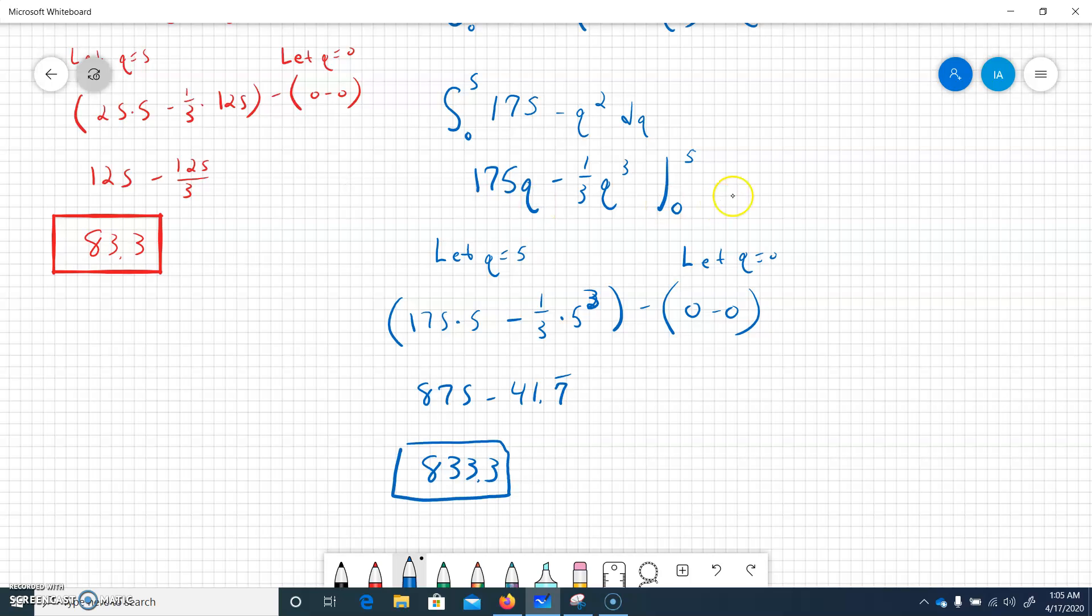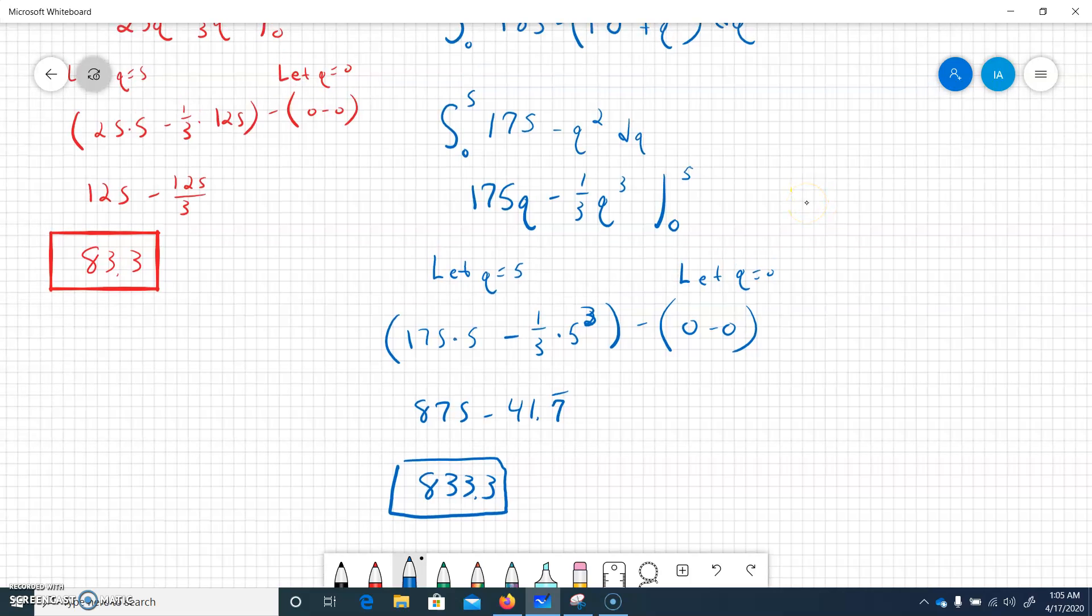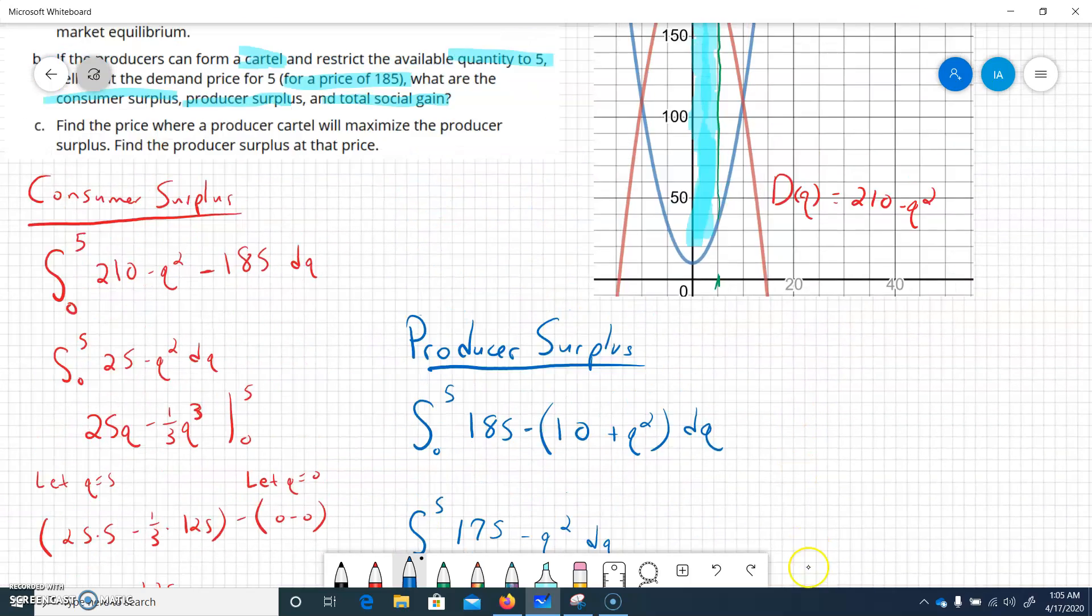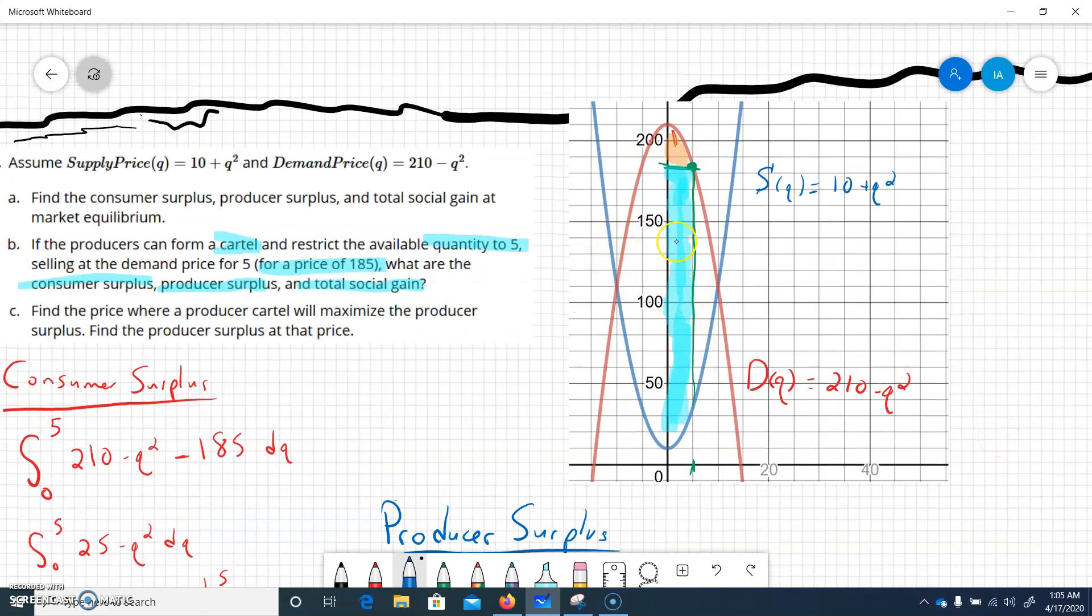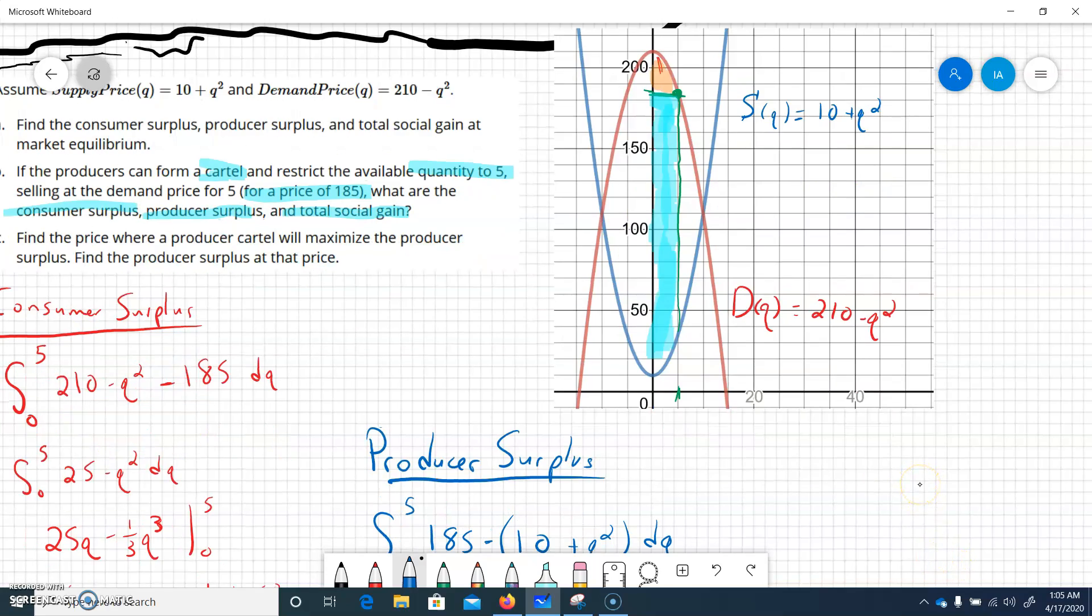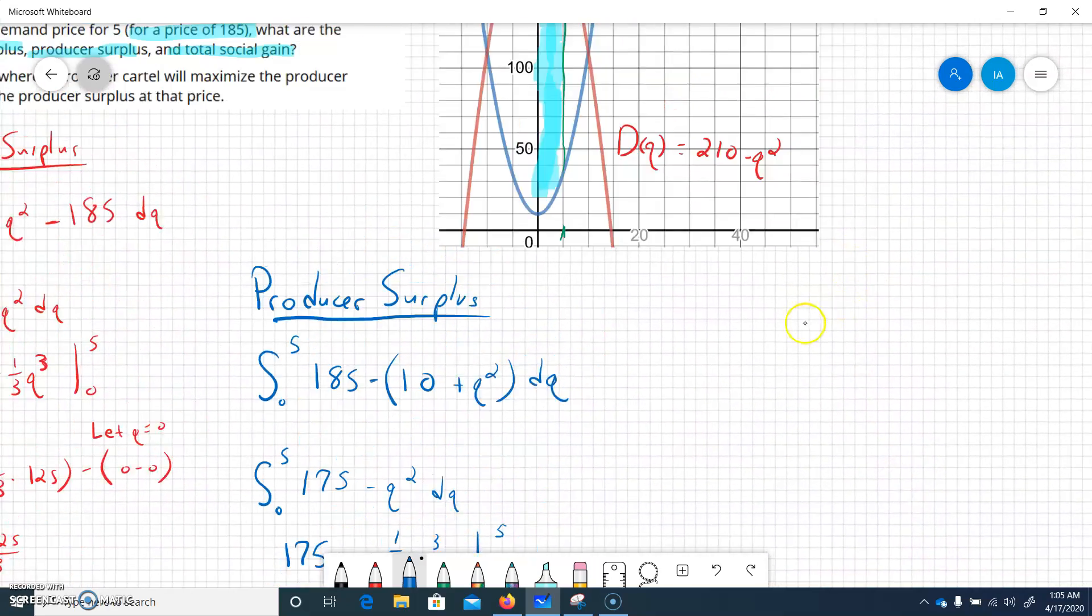So let's see, let's go back up to our graph. Our consumer surplus was 83.3, our supplier or producer surplus was 833.3. So if we look at our graph, it looks like the blue shaded region is much greater than the red shaded region. So that makes sense. Okay, so then we want to do total social gain.